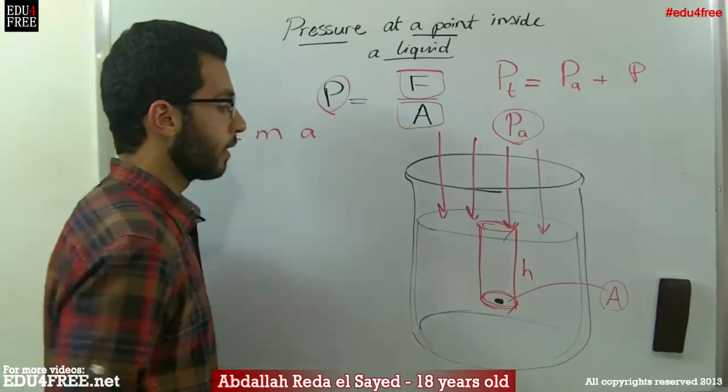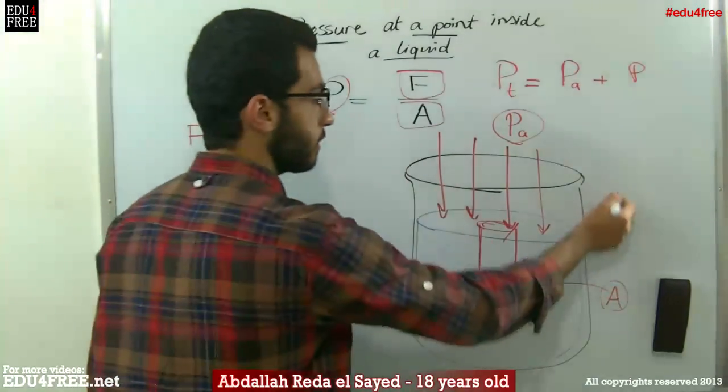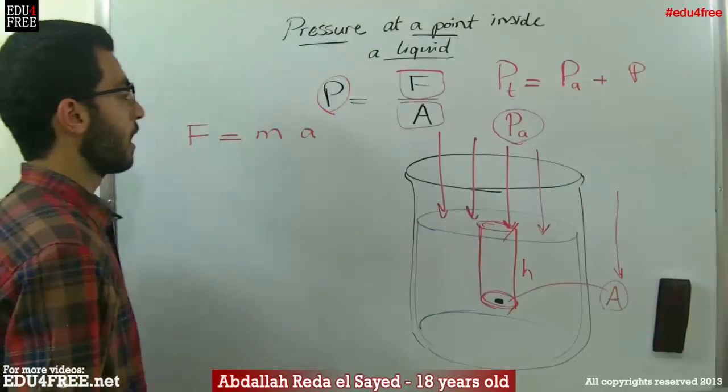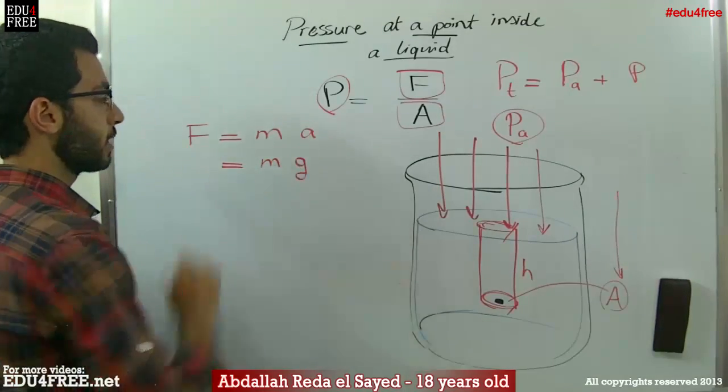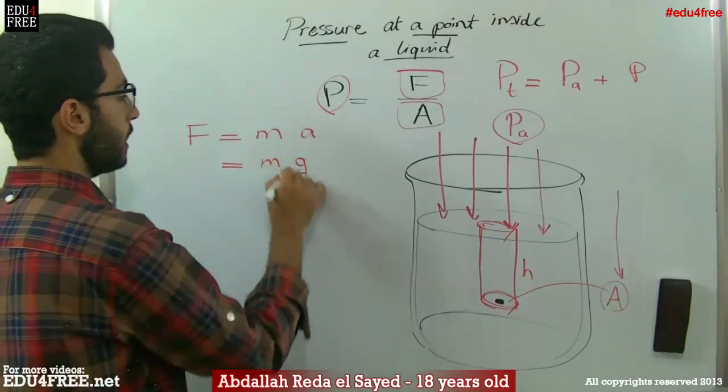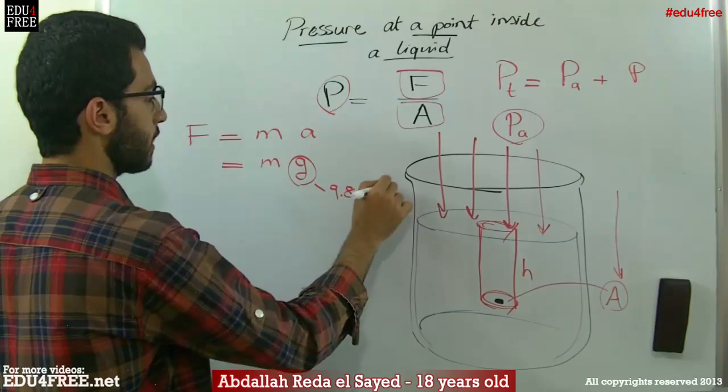And here, the liquid is exposed to gravitational acceleration downwards, like that. So, F will equal mass multiplied by g. The g here equals 9.8 meters per second squared.